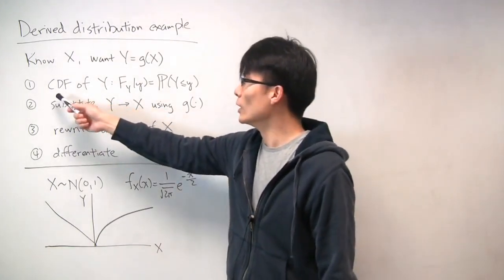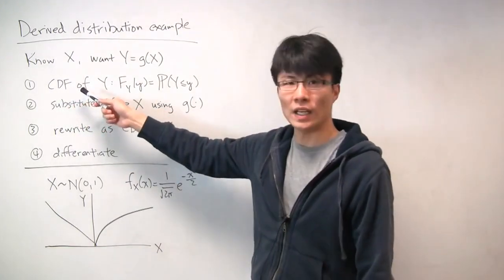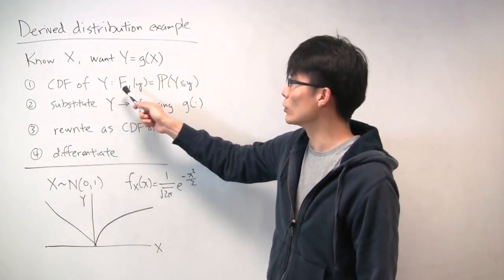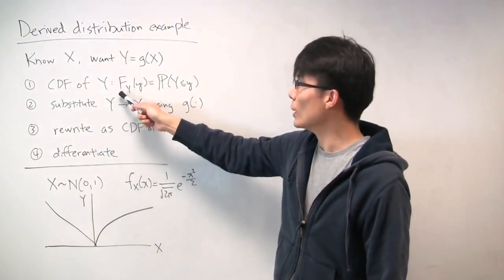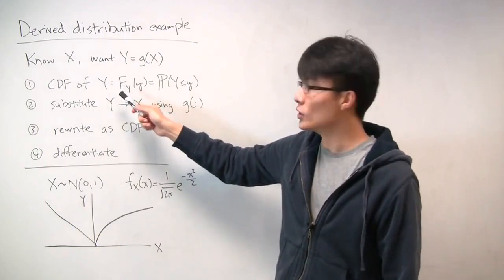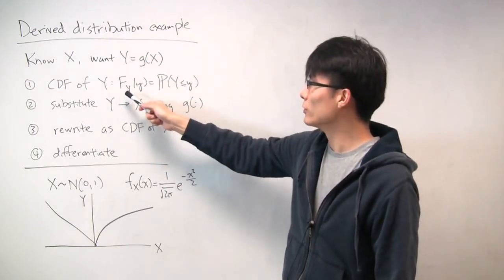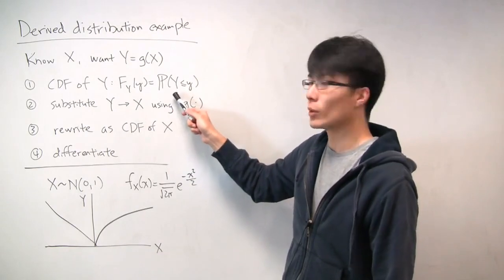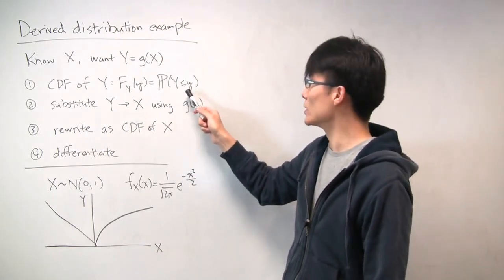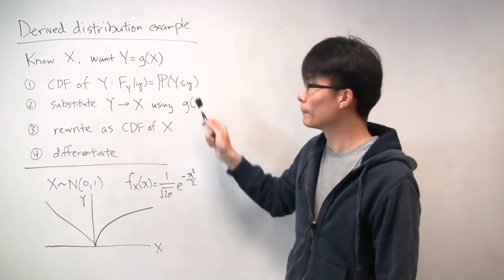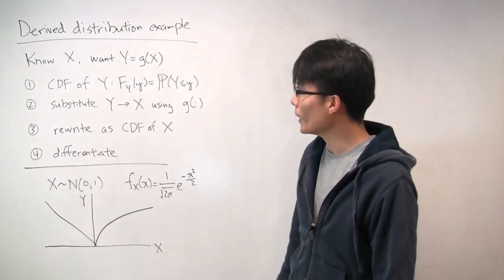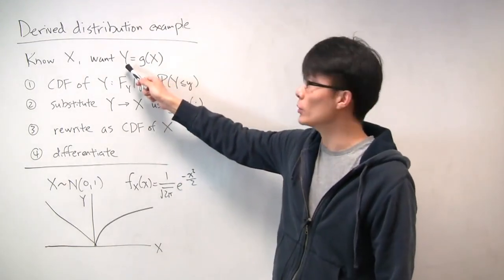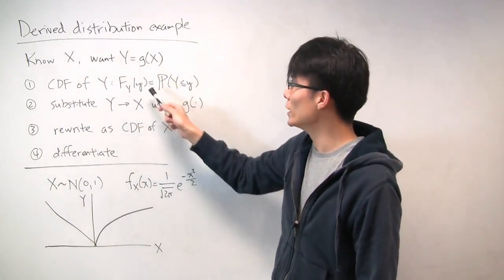The first step is to write out the CDF of y. Y is what we want, so we write out the CDF first. The CDF is F_y(y), which is the probability that the random variable y is less than or equal to some value little y.